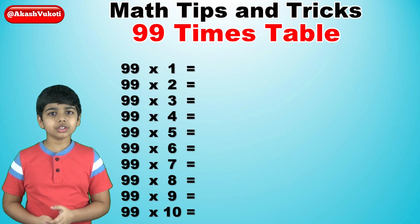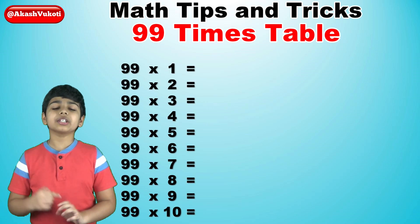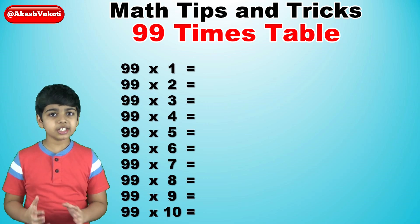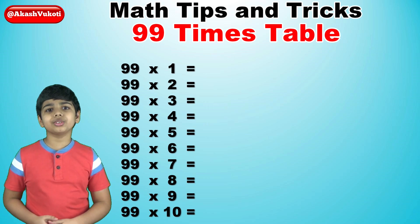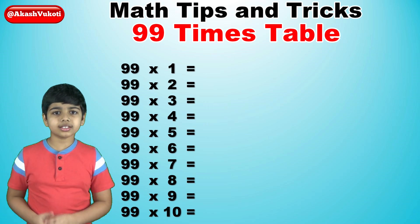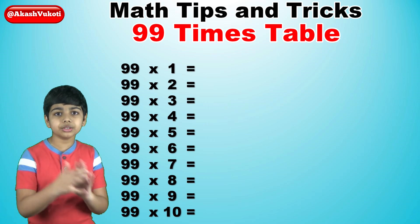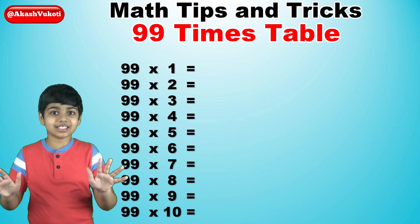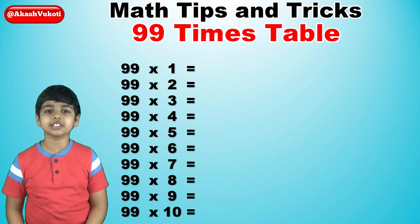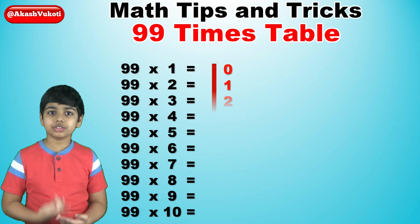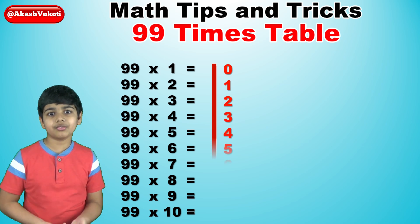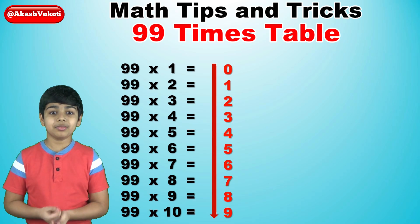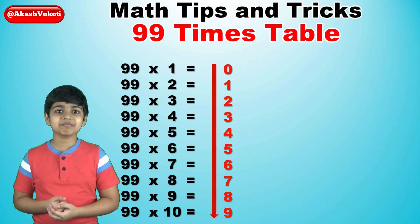So we start off from the very leftmost column. To do the leftmost digits, all we have to do is just write down the numbers from 0 to 9 in ascending order. Literally it's that simple — the leftmost digits are just 0, 1, 2, 3, 4, 5, 6, 7, 8, 9. That was really simple, right? Yeah, it was.